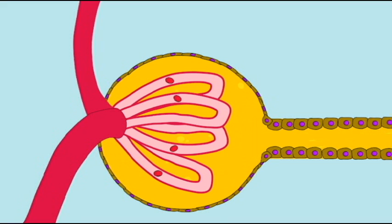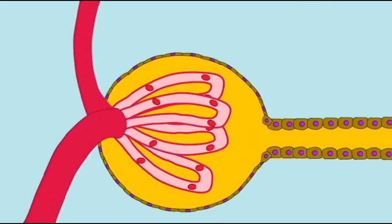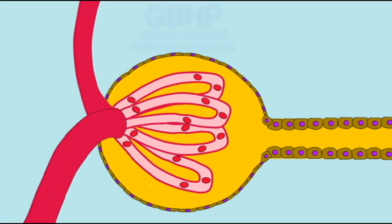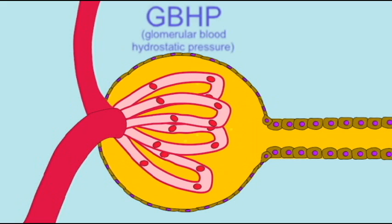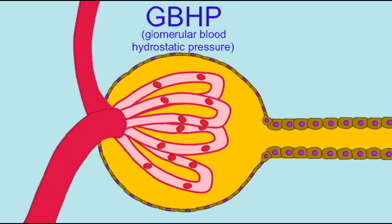Whether or not filtrate is formed depends on the interrelationship between three pressures. There is an outward pushing pressure pushing fluid from the capillary. This is the blood pressure of the glomerulus, which is a bit higher than a normal capillary.